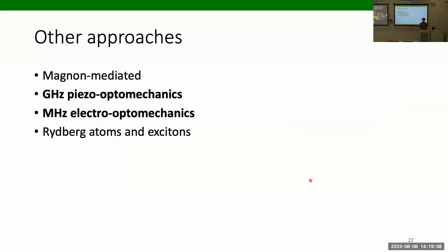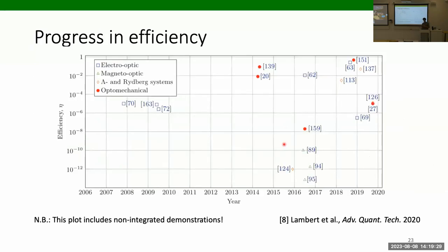Some other approaches I won't go into detail on are magnon-mediated optomechanical schemes, which in many ways are the most advanced in this area, Rydberg atom schemes with atomic vapors to mediate the transduction, and Rydberg excitons, which is a very new and quite exciting approach. Here's a plot of the progress in transduction over the years — there has been an upward trend closer and closer to unity efficiency. But this isn't the whole story: the other figures of merit like bandwidth and added noise matter too, and not everything on this plot is integrated.